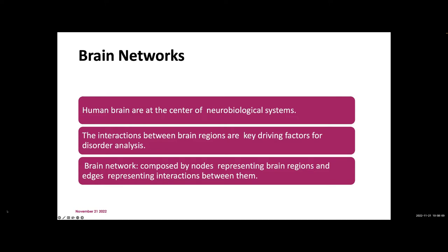The human brain is a very complex system. It consists of many regions and there are a lot of processes going on even during a single thought. There is a need to analyze these regions and understand how their interactions are responsible for certain disorders. To analyze any kind of disorder in the brain, we need some structure, and the authors implement a graph neural network composed of nodes representing the regions and edges representing the interactions between those regions.